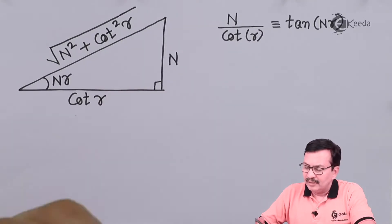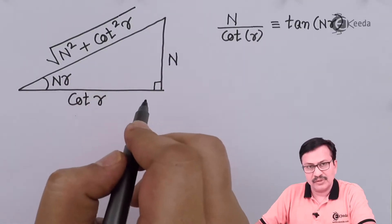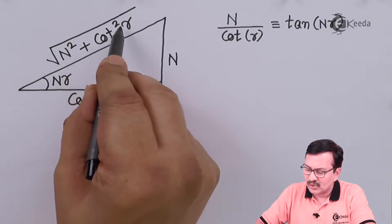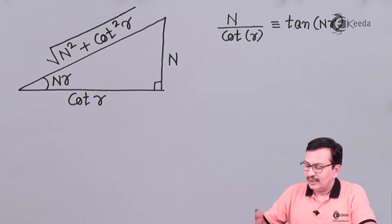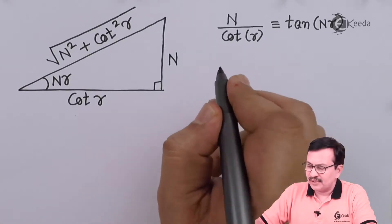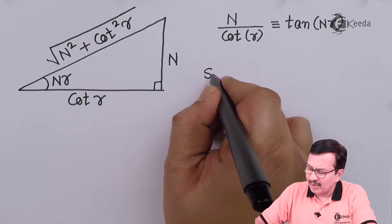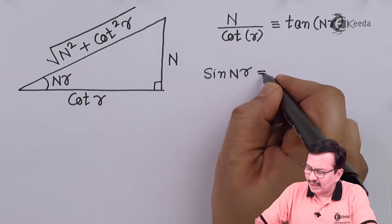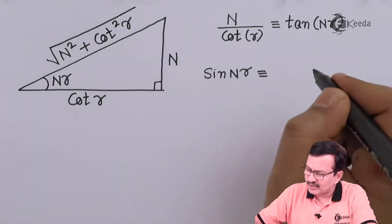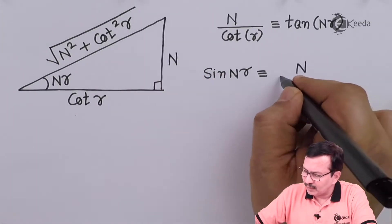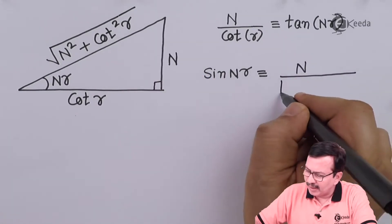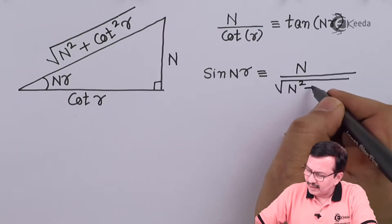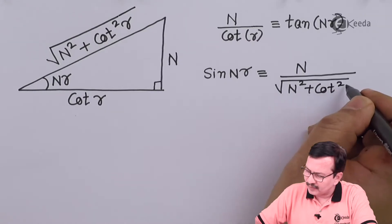To complete the right-angle triangle, we can use the Pythagoras theorem and the hypotenuse will be equal to √(n² + cot²(γ)). The next thing which we do is find out how much is sin(nγ), and sin(nγ) will be equal to the opposite side n divided by √(n² + cot²(γ)).